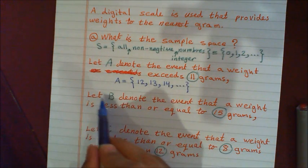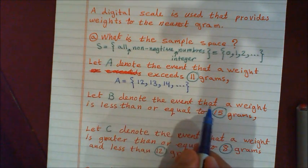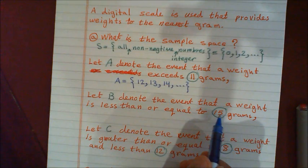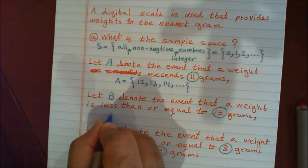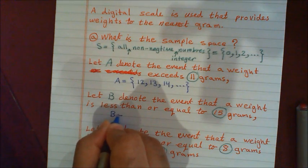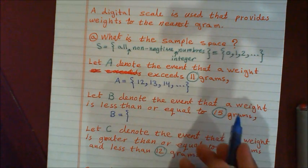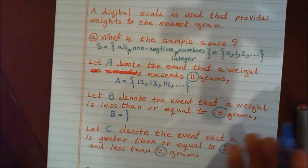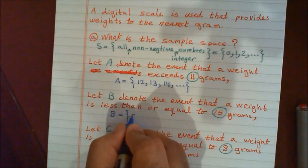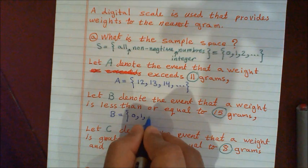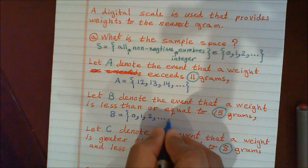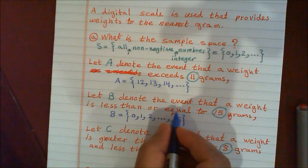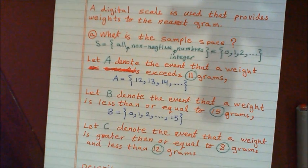Now B: let B denote the event that a weight is less than or equal to 15, so 15 is included. B is equal to {0, 1, 2, ..., 15}. Going from 0 up until 15, and 15 is included because it says 'less than or equal to,' so the equal sign means 15 is part of the event.